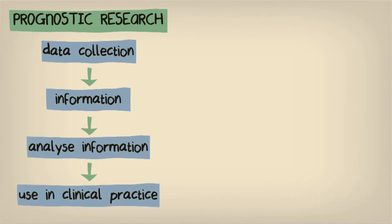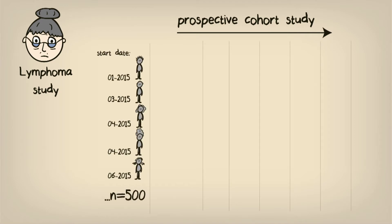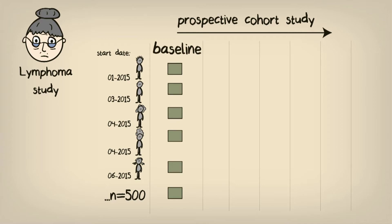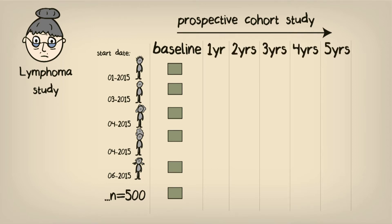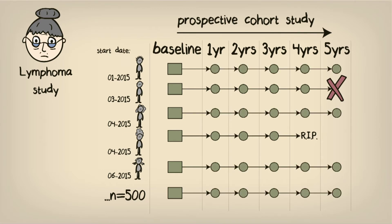Imagine that the longitudinal study we designed previously for our lymphoma research question has already been conducted. We enrolled patients over a period of time and measured a range of patient characteristics at baseline, including general information, medical conditions, disease-specific information, biochemistry, and treatment information. We followed that group of patients for five years and recorded their follow-up time up until one of three situations: the patient died, the patient left the study for another reason, or up until the end of the five-year follow-up period, indicating that they survived for five years after baseline.